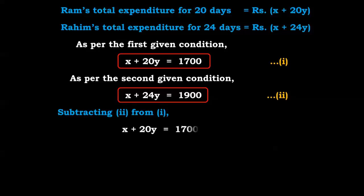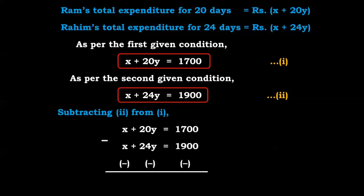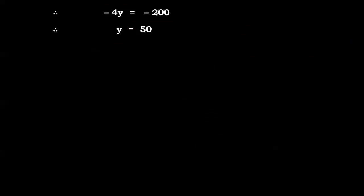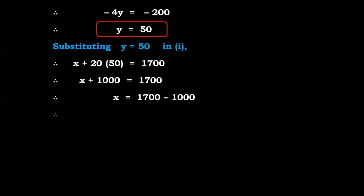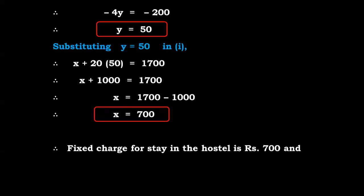Subtracting equation 1 from equation 2: (x + 24y) - (x + 20y) = 1,900 - 1,700, so 4y = 200, therefore y = 50. Substituting y = 50 in equation 1: x + 20×50 = 1,700, so x + 1,000 = 1,700, therefore x = 700. The fixed charge for stay in the hostel is rupees 700 and the cost of food per day is rupees 50.